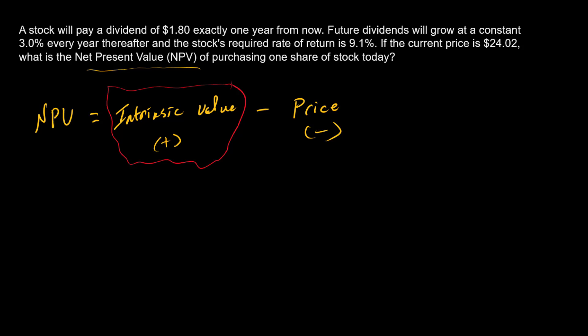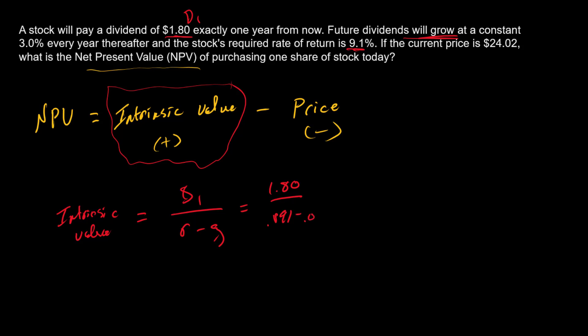Let's go back to the problem and see what we have to work with. We have a D1 of $1.80, and we know there's going to be constant growth in future dividends. So this is a Gordon constant growth stock. Our intrinsic value is D1 divided by (R minus G), where R is our required return on the stock of 9.1%. So that's $1.80 divided by (0.091 minus 0.03), which gives us $29.51.